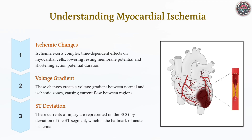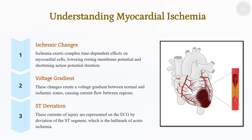Myocardial ischemia results from an oxygen supply-demand mismatch, causing metabolic and electrical disturbances. It shortens the action potential, lowers resting membrane potential, and disrupts depolarization and repolarization, leading to ST-segment deviations, T-wave changes, and, in prolonged cases, Q-waves signaling irreversible damage.